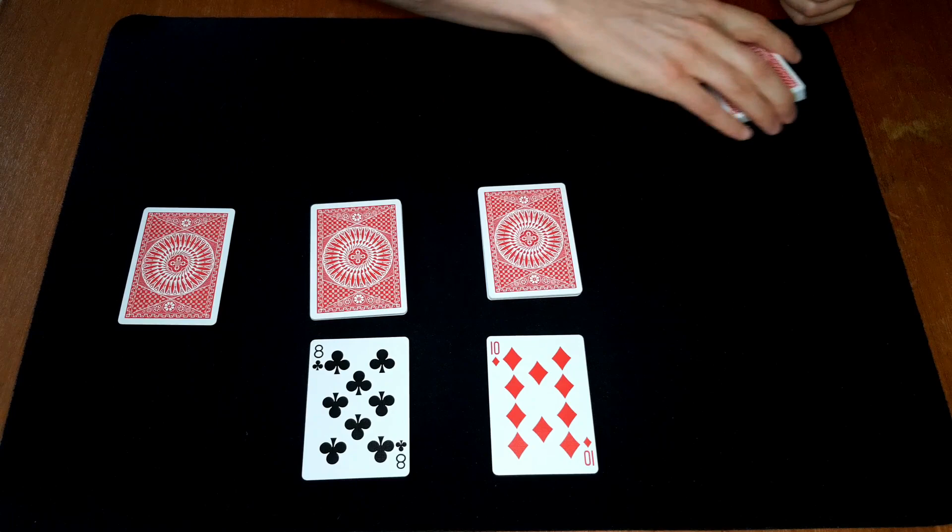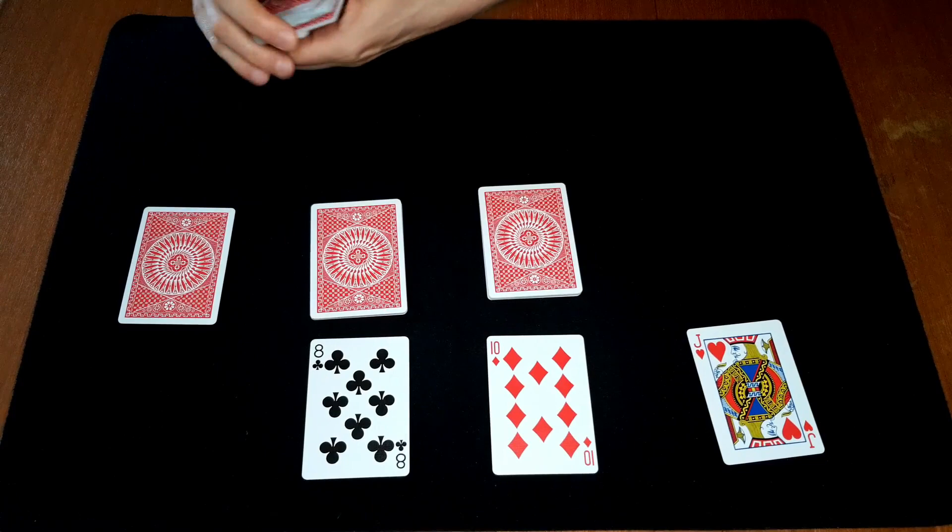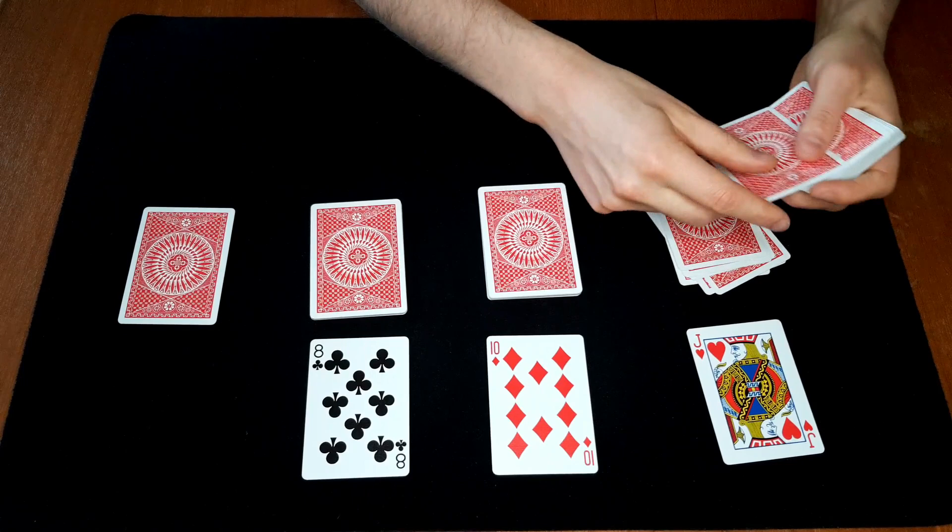And finally the third and final spectator would pick this card. It's a jack. Let's count the picture cards as tens as well.